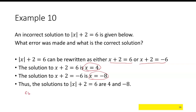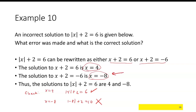Let's check. If x equals 4, the absolute value of 4 plus 2 is 6 — that checks. But if x equals negative 8, the absolute value of negative 8 is 8, and 8 plus 2 is 10, which is not equal to 6. So there is a problem with that solution.